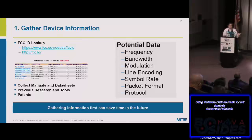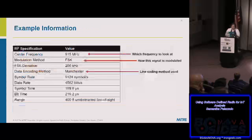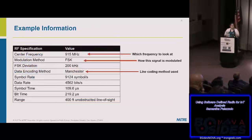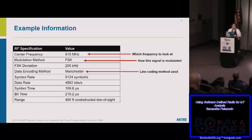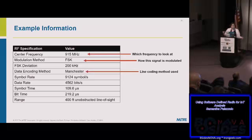To step through these stages, I'm going to use an example system — actually an ecosystem of devices. From FCC ID lookups and manuals, I gathered key information. The center frequency is 915 megahertz — that tells me where to look when I use the SDR. The modulation method is FSK, frequency shift keying. And there's Manchester line encoding. Those two will come up again shortly.